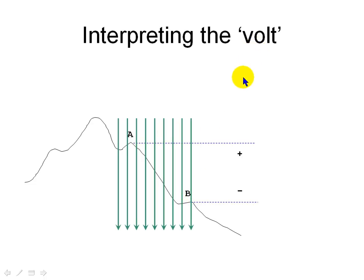We say A is higher than B and A is higher than B in 30 volts. 30 volts? Yes, in 30 joules per Coulomb. What does it mean?